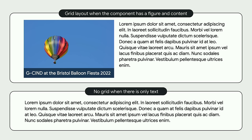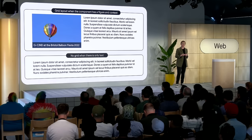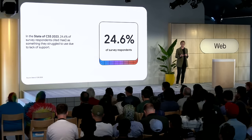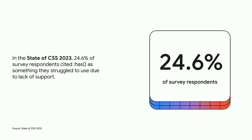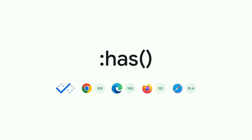Calling :has() a parent selector kind of simplifies it — there's a lot more that you can do with :has(), and on web.dev and developer.chrome.com we've got resources to help you find out more. In the State of CSS 2023 survey, :has() actually became top of the list of features that developers could not use due to browser incompatibilities, so it was part of Interop 2023. It became Baseline newly available in December 2023 and therefore will become widely available in June 2026.